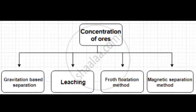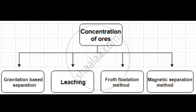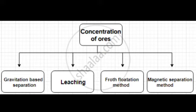Then, what are the methods of concentration of ores? This is the flow chart of concentration of ores. First, gravitation based separation. Second, leaching. Third, froth flotation method. Fourth, magnetic separation method. These are the important methods involved in the concentration of ores.